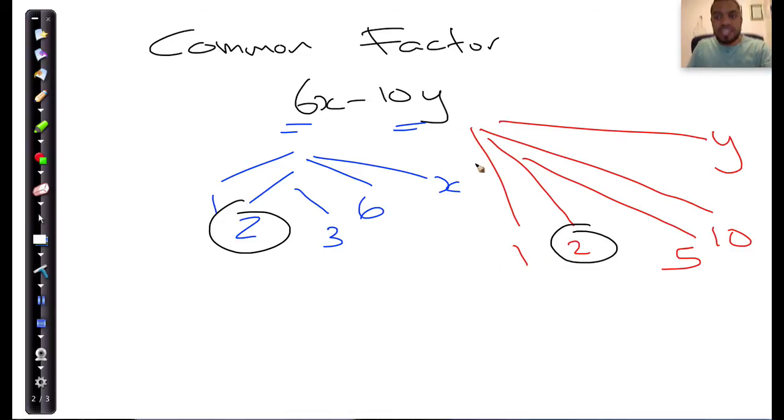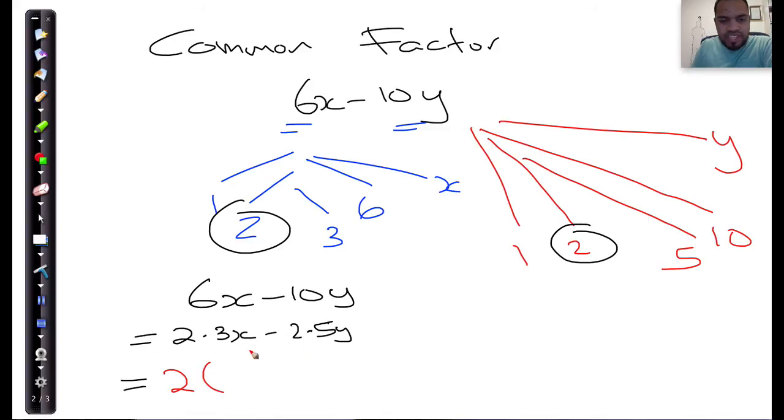What you're going to do is you're going to take this expression, which is 6x minus 10y, and you're going to have to break it down into 2 multiplied by something. And that's going to be 2 multiplied by 3, because 2 times 3 gives you 6, multiplied by x minus 2 multiplied by 5, multiplied by y. And then you want to do what we've done earlier, where you take out what you see that is common in both of them now, and that's a 2, and you want to apply the distributive law and reverse that operation.